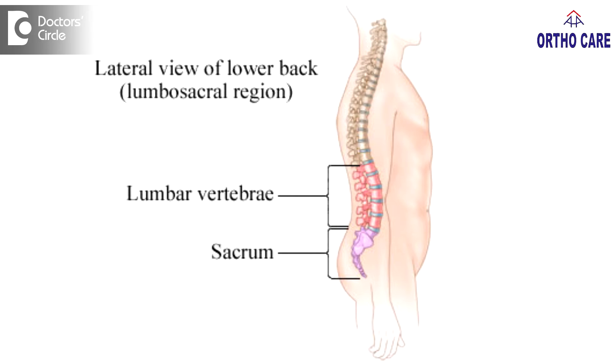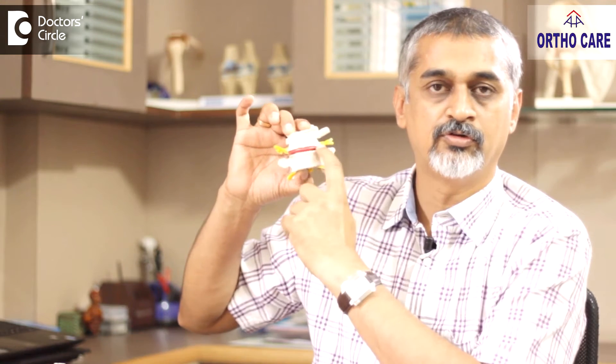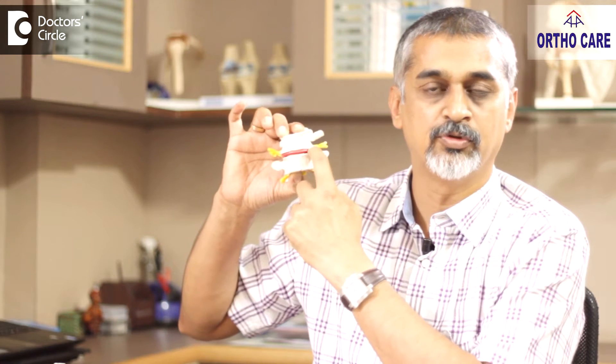The lumbosacral region is part of the spine, which is your lower back, where crucially there are six joints called the lumbosacral joint — five in the lumbar region and one at the junction of the lumbar and sacral region. Between each joint, when we look into it anatomically, there are three different joints in each segment area. This is one of the segments I am trying to show you. There are two bones and there is a joint here, called the disc space area.